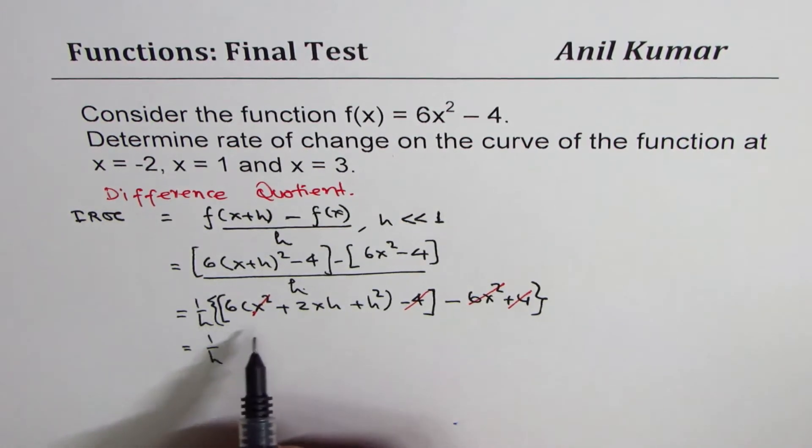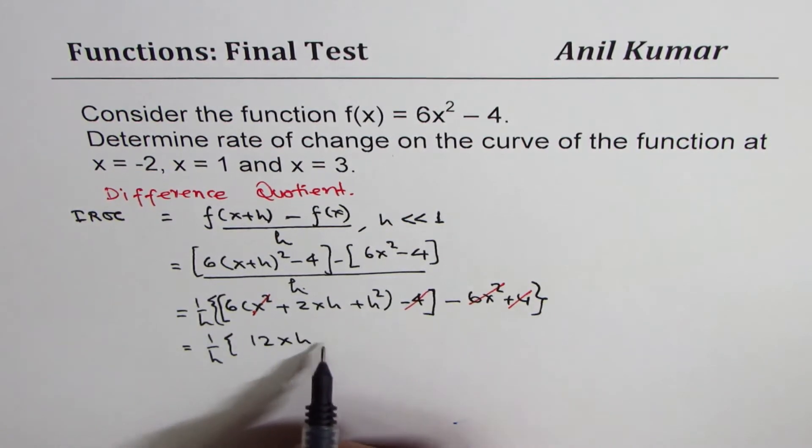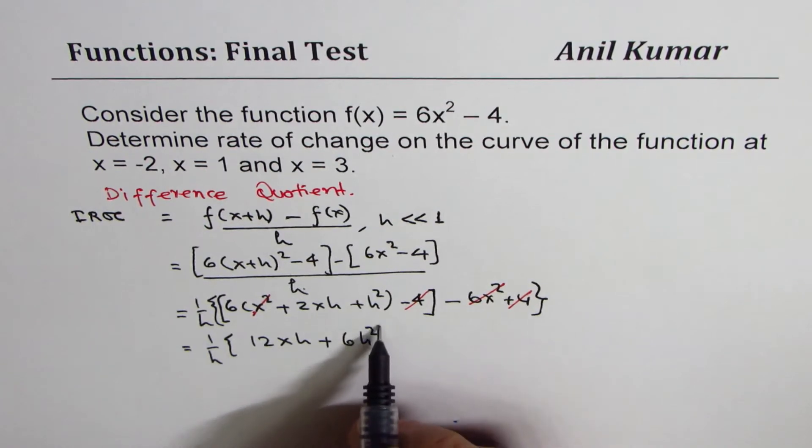So, what you are left with is 6 times 2, which is 12xh plus 6 times h². That's what we are left with.